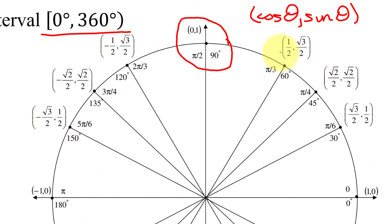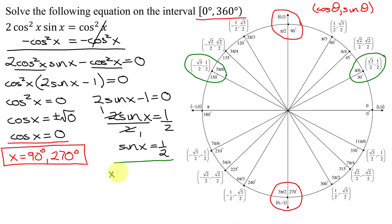Looking around my unit circle, y is equal to one half here at 30 degrees. And then going around the unit circle, y is also equal to one half at 150 degrees. So my other solutions are x equals 30 degrees and x equals 150 degrees.